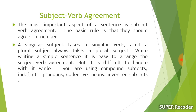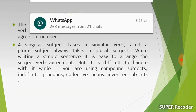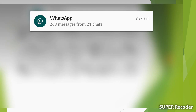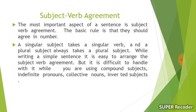A singular subject takes a singular verb, and a plural subject always takes a plural verb. While writing a simple sentence, it is easy to arrange subject-verb agreement. But it is difficult to handle when using compound subjects, indefinite pronouns, collective nouns, or inverted subjects. Subject-verb agreement is very necessary in an academic text.